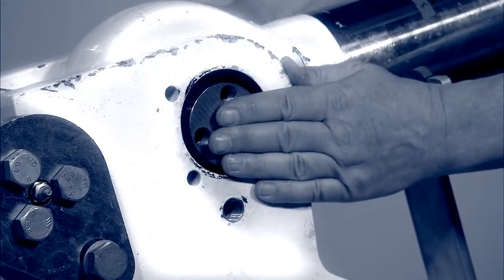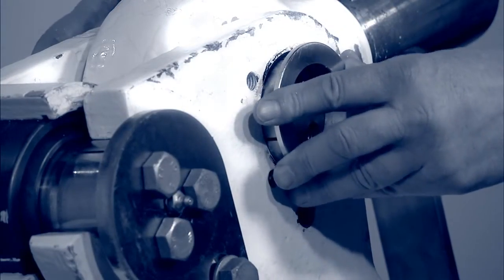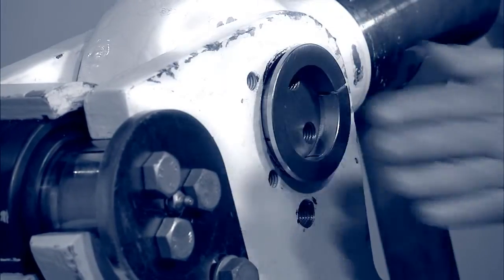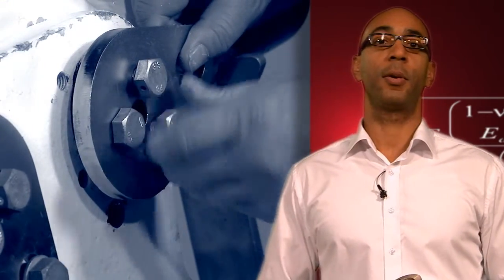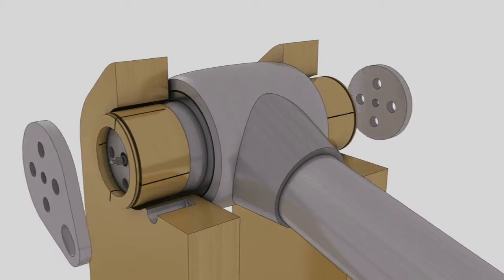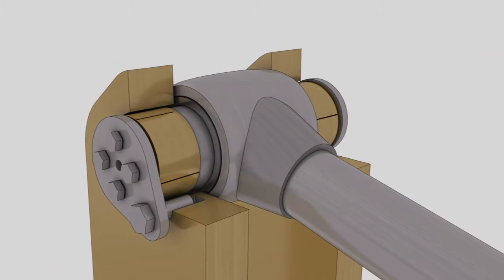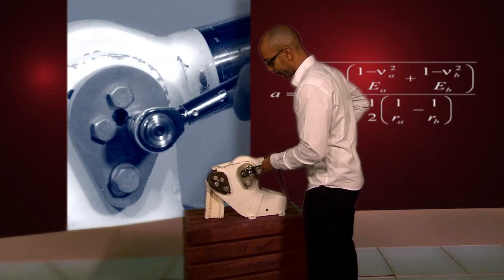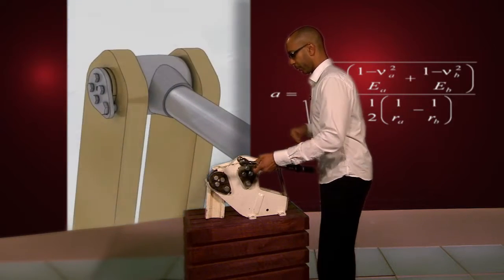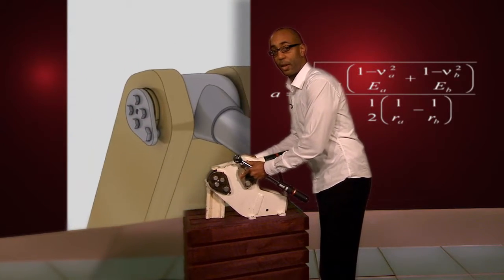The Bondura joint can even reduce slack in equipment where there is ovality in the supports. Simply tightening the screws will force the holes in the support to regain their original shape as the tapered sleeves move into position. Now this is a solid joint.